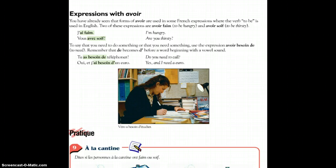Let's review the forms of avoir. Avoir means to have. I have, j'ai. You have, tu as. He, she, or one has, il, elle, on a. We have, nous avons. You all have, vous avez. They have, ils or elles ont.